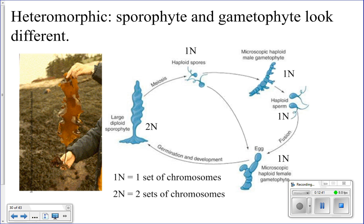In heteromorphic alternation of generations, the gametophytes have sexes — a male gametophyte and a female gametophyte. The female produces an egg, the male produces sperm, and the sperm fertilizes the egg which stays attached to the female, producing a zygote that grows on top of the female gametophyte and develops into the sporophyte.